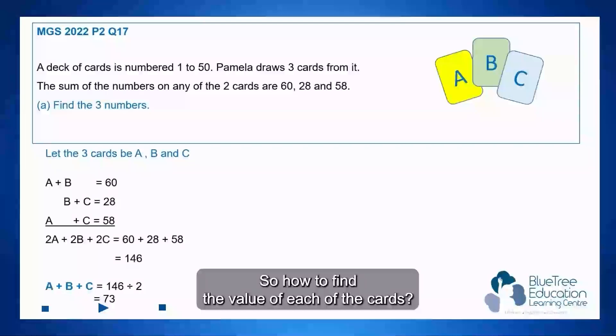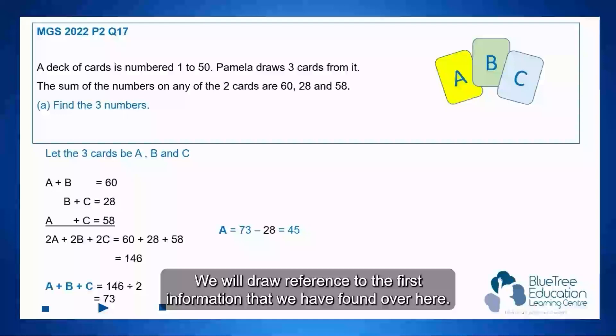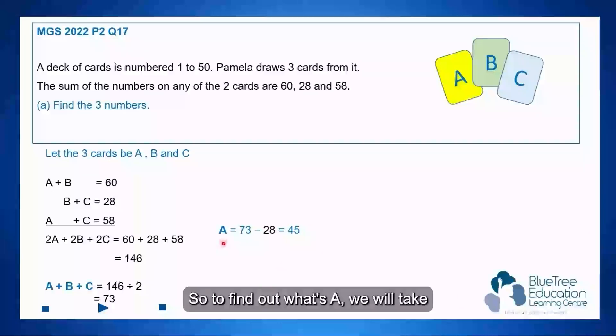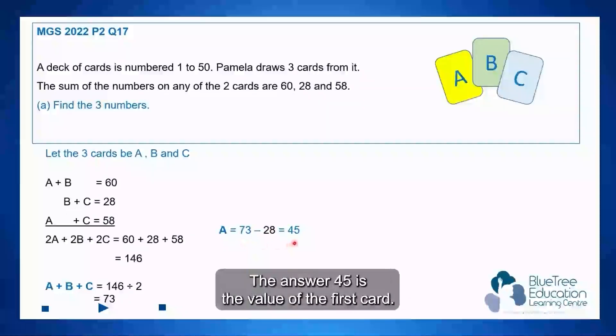So how to find the value of each of the cards? We will draw reference to the first information that we have found over here. So to find out what's A, we will take 73, which is made up of A, B and C and take away from this value of B plus C, which is 28. So when B plus C is 28, we take it away from 73. The answer 45 is the value of the first card.